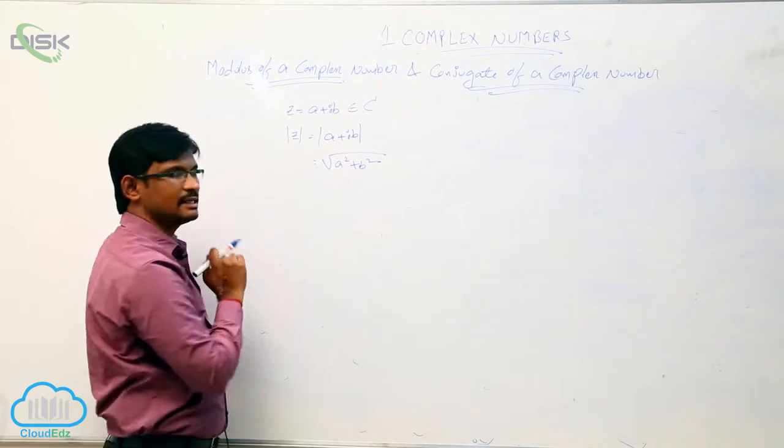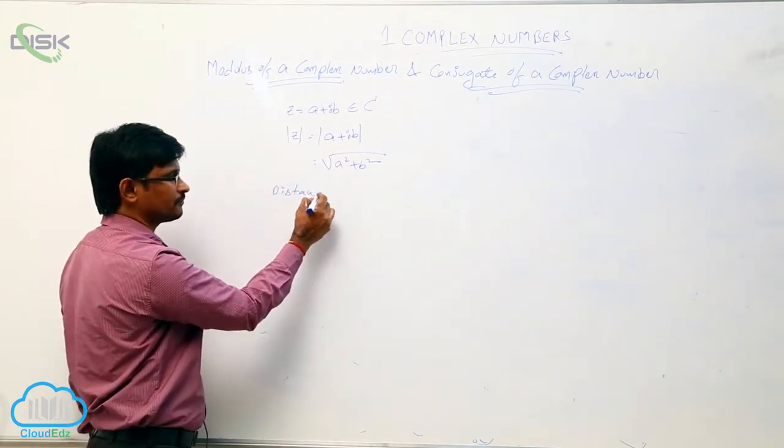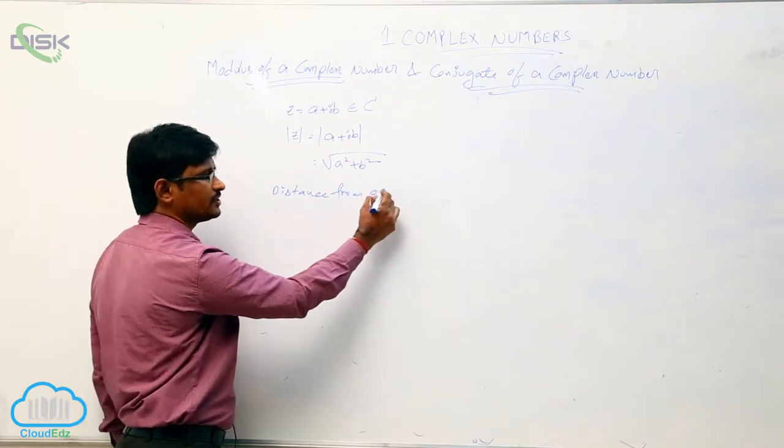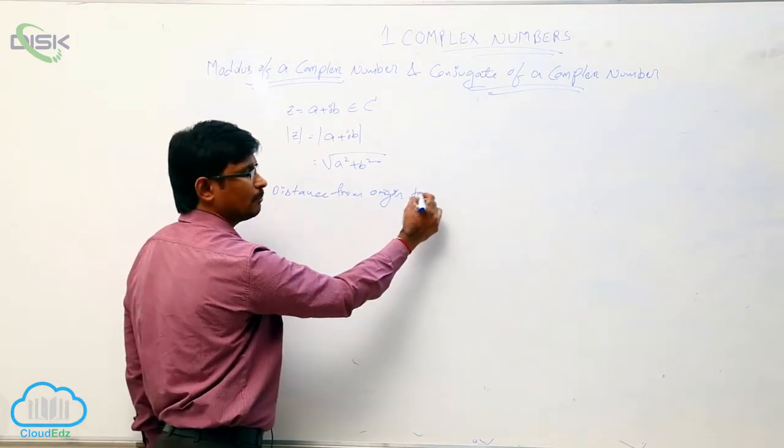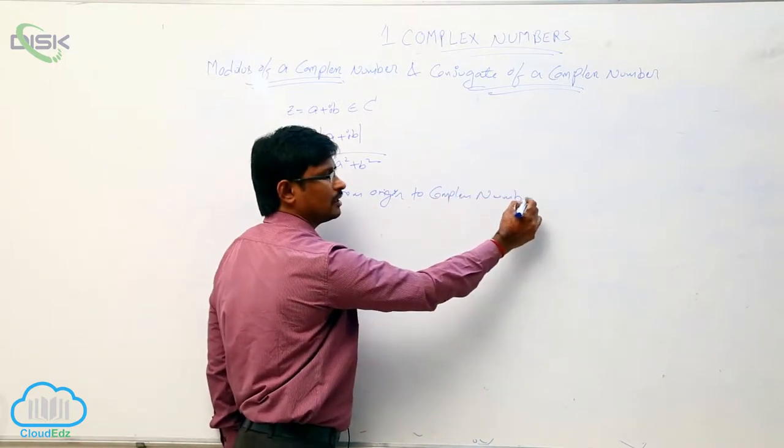This mod of z is nothing but distance from origin, distance from origin to complex number. This is nothing but mod z.